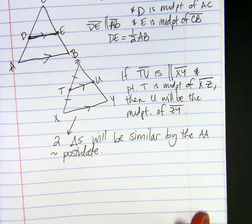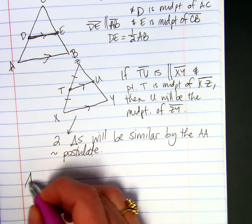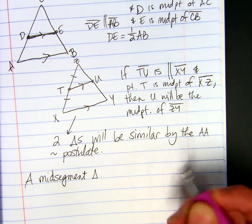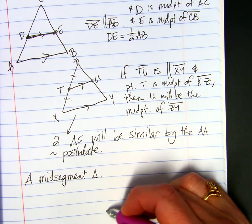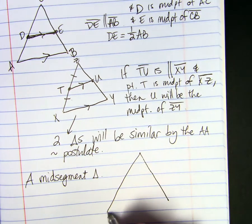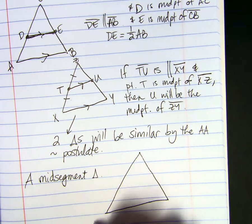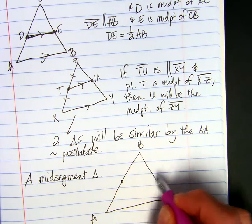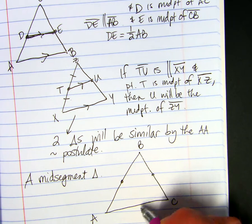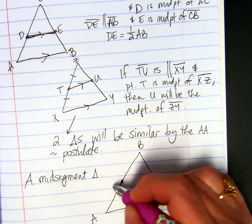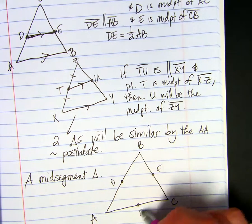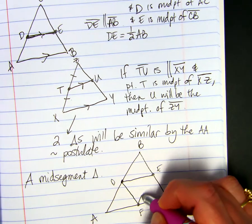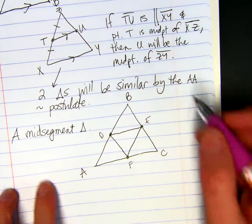We get to draw a mid-segment triangle. So we have triangle A, B, C, and then midpoint D, E, F. And we draw a triangle using those midpoints. That's called the mid-segment triangle.